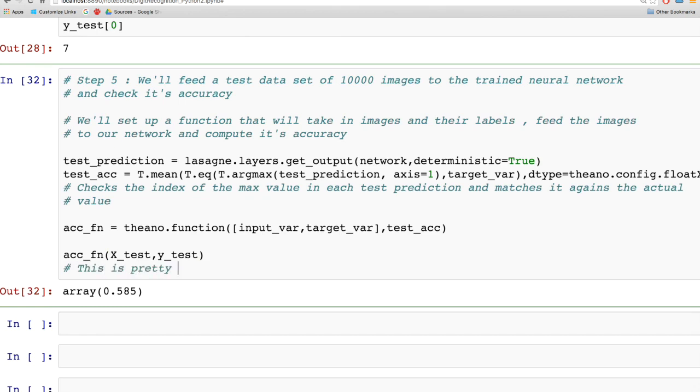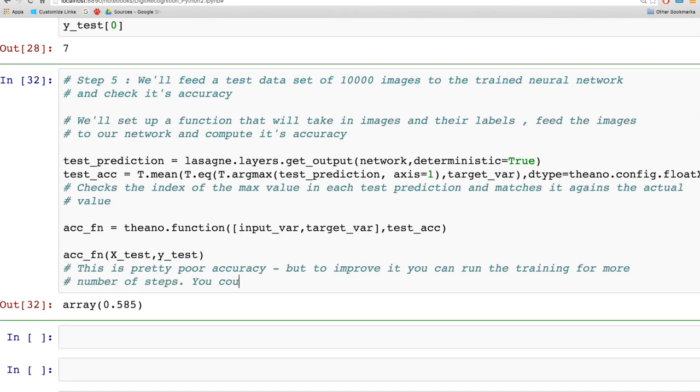Dropout randomly drops edges when passing data through the network. If we remove that and keep the weights constant, we get better accuracy, but it's still pretty poor. To improve this, there are several things you could do. First, you could run training for more steps.